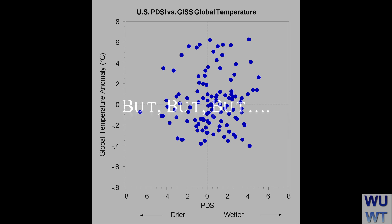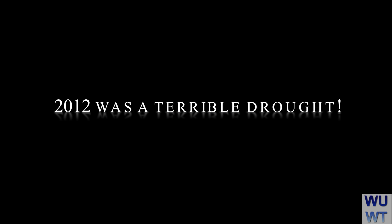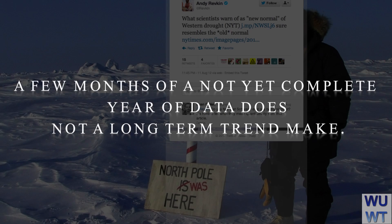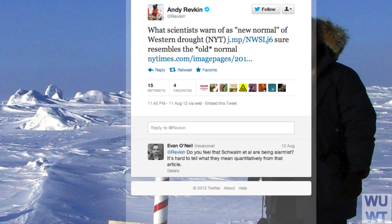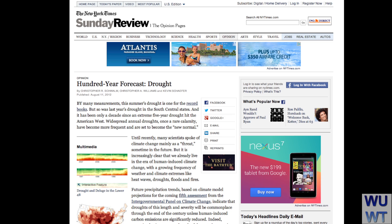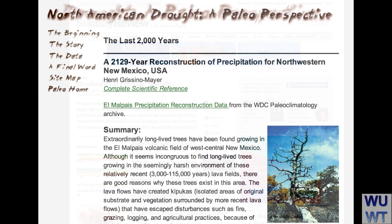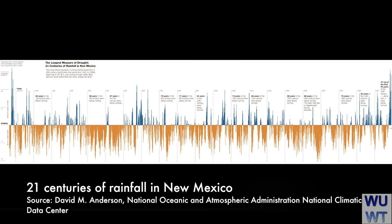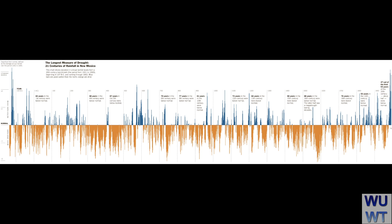Of course, proponents might say that 2012 was a terrible drought — well, yes, it was, it is. But a few months of a not-yet-complete year of data does not make a long-term trend, and we've seen worse in the past. In a tweet, New York Times reporter Andrew Grefkin agrees, drawing attention to this Sunday essay. This 21st-century reconstruction of rainfall for New Mexico suggests that what New Mexico experiences today really isn't any different from what it experienced in the past when CO2 levels were far lower. Full details are in the links in the description below, going back to whatsupwiththat.com.